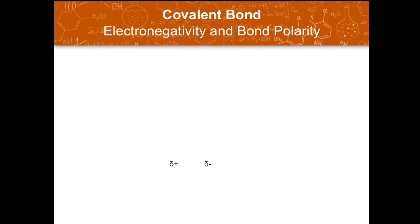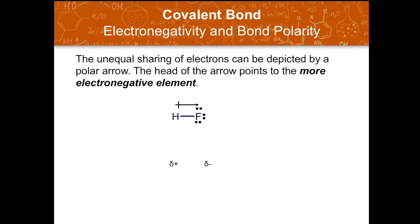The electronegativity values are used as a guideline to indicate whether the electrons in a bond are equally or unequally shared between two atoms. In the example of hydrogen and fluorine, there is an unequal sharing of electrons. Fluorine has an electronegativity value of 4, while hydrogen has 2.1, confirming the unequal sharing.